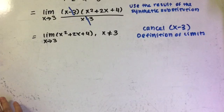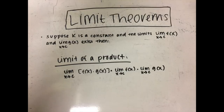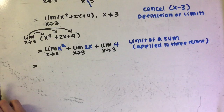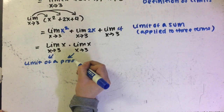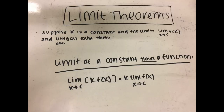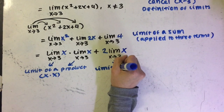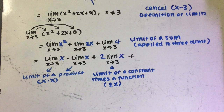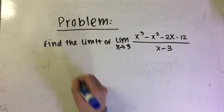Now, by using the limit of a sum property, we distribute the limit to each term. Following the limit theorems further, we can use the limit of a product property to write the limit of x squared as x approaches 3 as the limit of x as x approaches 3 times the limit of x as x approaches 3, since x squared equals x times x. Then we use the limit of a constant times a function property to write the limit of 2x as x approaches 3 as 2 times the limit of x as x approaches 3, the constant 2 going in front of the limit. After that, we use the limit of a constant property to write the limit of 4 as x approaches 3 as 4. Then using the identity function we plug in 3 for the x's and solve, which equals 19. So the limit of f(x) as x approaches 3 equals 19.